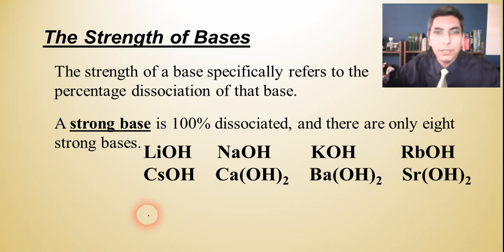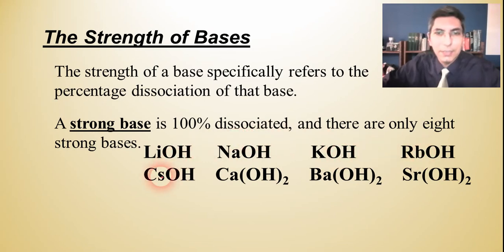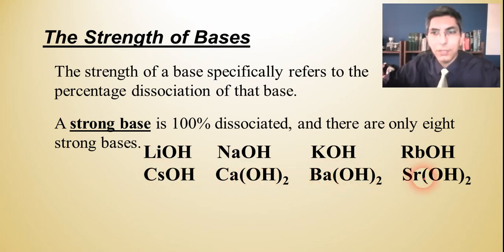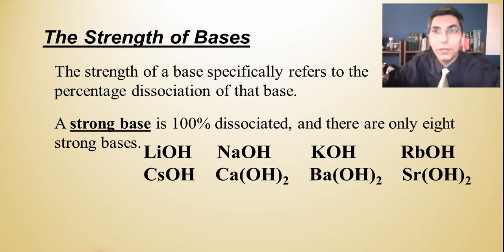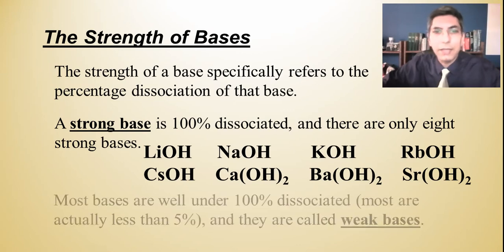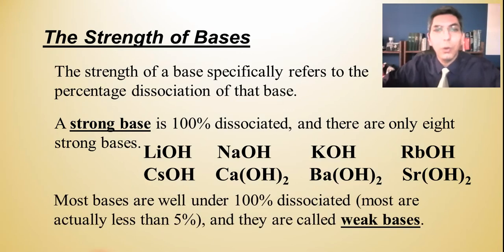The eight strong bases are basically the group one and two hydroxides that are soluble: lithium hydroxide, sodium hydroxide, potassium hydroxide, rubidium hydroxide, and cesium hydroxide — those are your group one hydroxides — and then calcium hydroxide, barium hydroxide, and strontium hydroxide, which are the soluble group two hydroxides. If you see anything else that's a base, it's going to be a weak base.